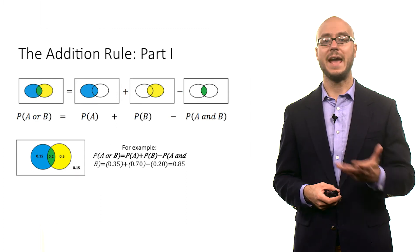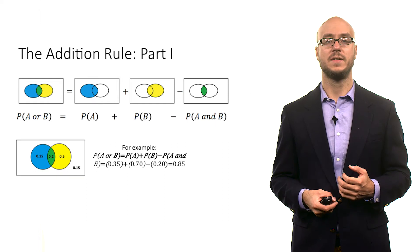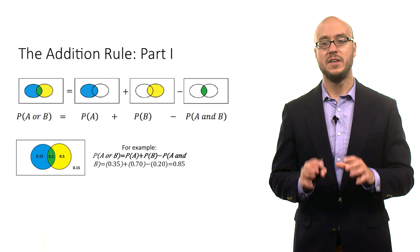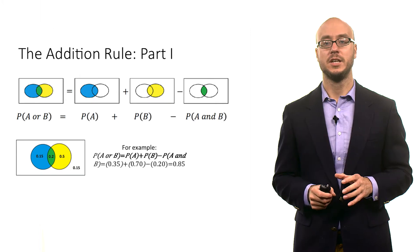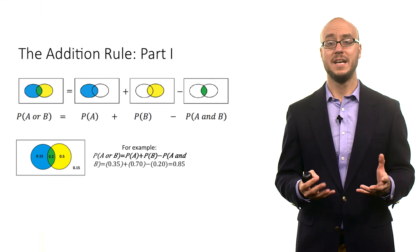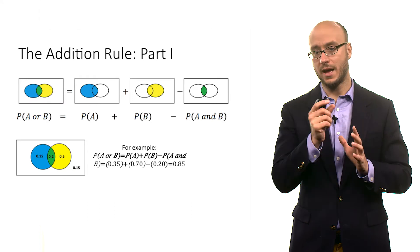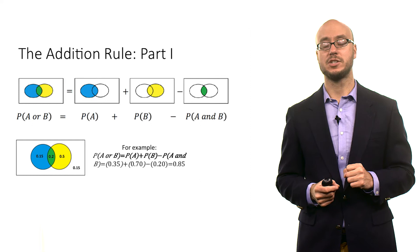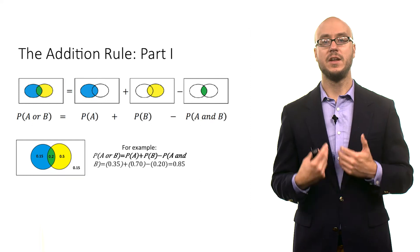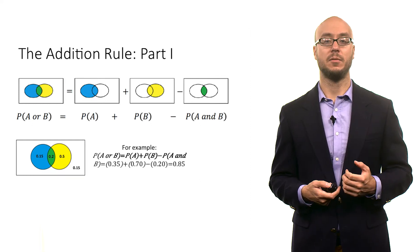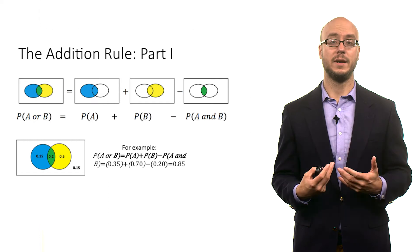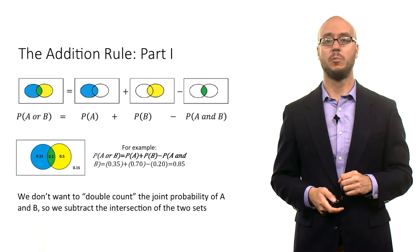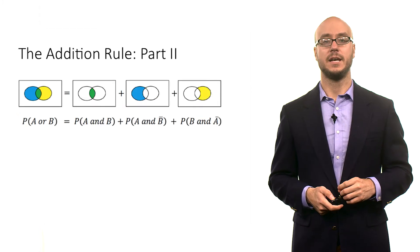Here's an example of finding the probability of A or B. Suppose the probability of A overall is 0.35 and the probability of B overall is 0.70. If you add those two probabilities, you get a probability of A or B above one, so you know you're double counting the middle part. You subtract out the probability of the intersection, which is 0.20, and you obtain the probability of A or B as 0.85.